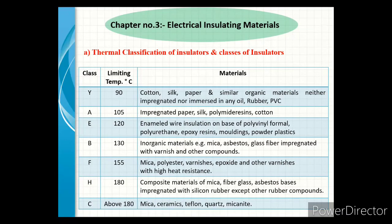Class H has a limiting temperature range of 180°C. Materials included are composite materials of mica, fiberglass, and asbestos base impregnated with silicone rubber, excluding other rubber compounds. Class C also has a limiting temperature range above 180°C. Materials included are mica, ceramics, teflon, quartz, and mica products.